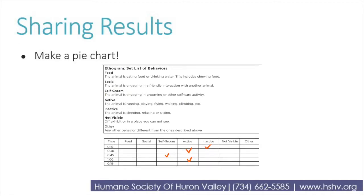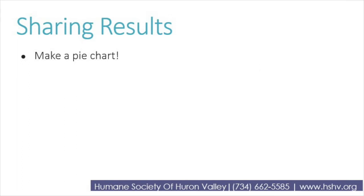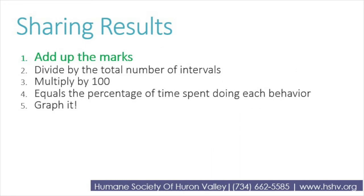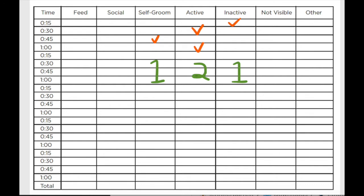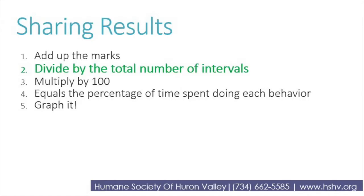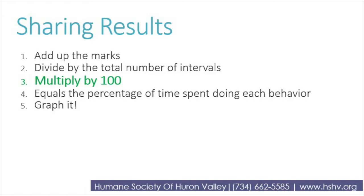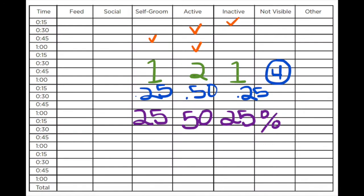Awesome — we have an ethogram filled out. Now the tricky part is, how do we share our results? Do you remember that Rhesus macaque pie chart from the beginning of this lesson? We're going to learn how to make one of those. First, add up all the marks in each column: we have one self-groom, two active, and one inactive. Then divide those numbers by the total number of intervals — we had four intervals, so divide one by four, two by four, and one by four. Then multiply by 100 to get the percentage of time spent on each behavior. We get 25%, 50%, and 25%.